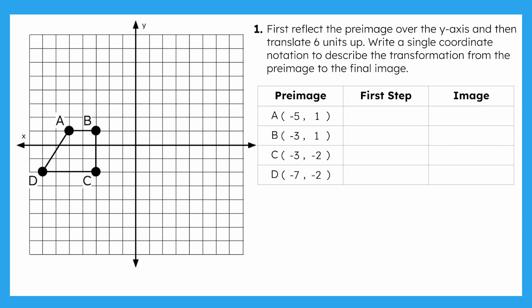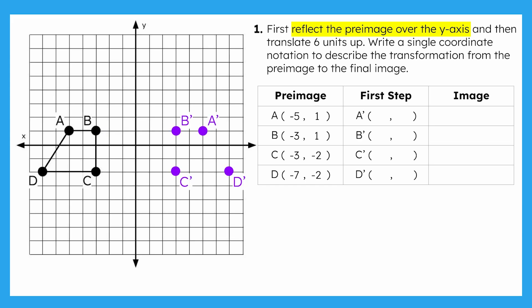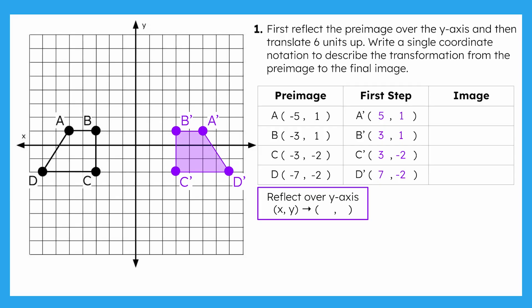Now let's perform the first transformation in the sequence: reflecting the pre-image over the y-axis. When reflecting, remember that all the new points are the same distance from the line of reflection as the original points. Go ahead and draw that reflection in your guided notes and record those new coordinates. Pause the video now! Since point B is 3 units to the left of the y-axis, point B' will be 3 units to the right of the y-axis. We use this same strategy to plot the other 3 points, creating A', B', C', D', and here are its coordinates. The coordinate notation that describes the reflection over the y-axis is negative x comma y, since only the sign of the x-coordinate changes.